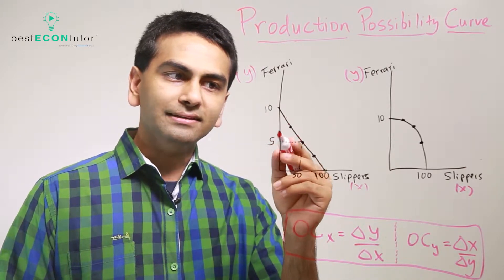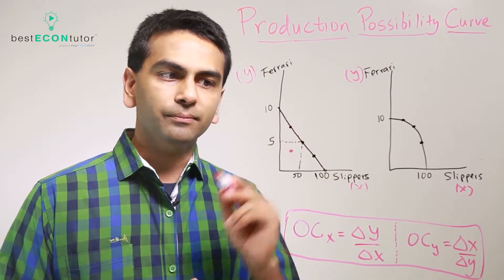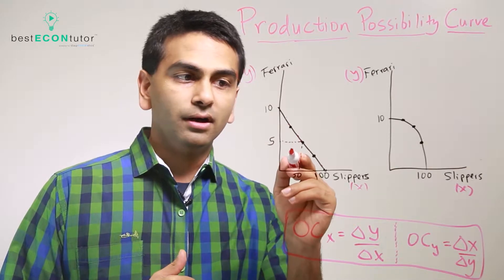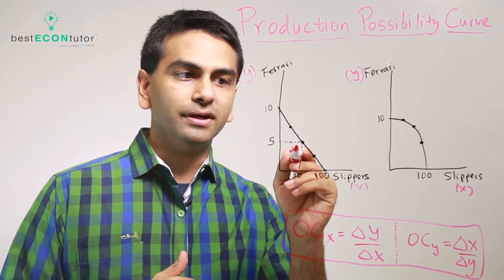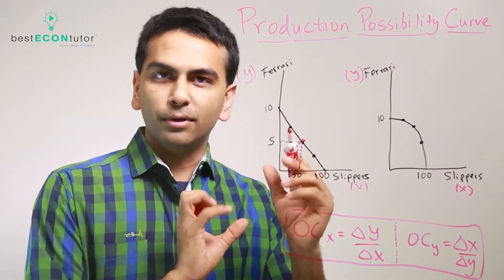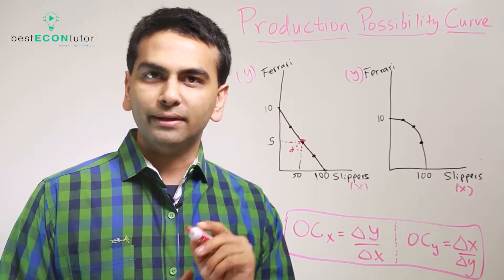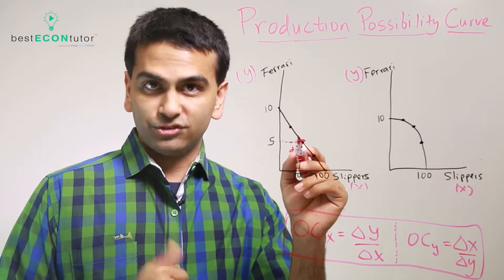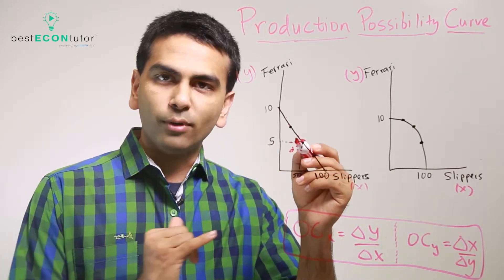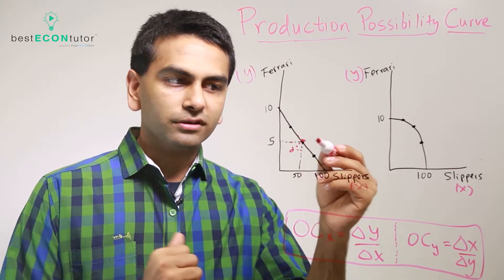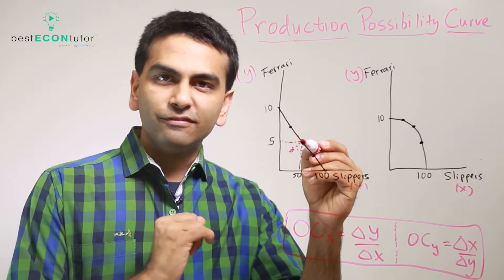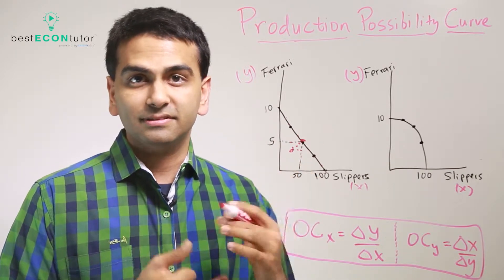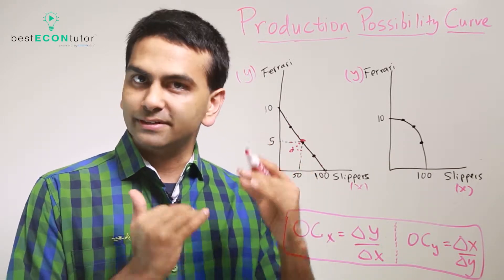Any point on the inside of the curve is considered inefficient because you're able to make more of both goods — so stopping production there is inefficient. Anything on the line is efficient because to make any more of one good, you'd have to make fewer of the other. If you wanted to make another pair of slippers, you'd have to make fewer Ferraris. That's why PPFs and PPCs always slope downwards — because of the trade-off.